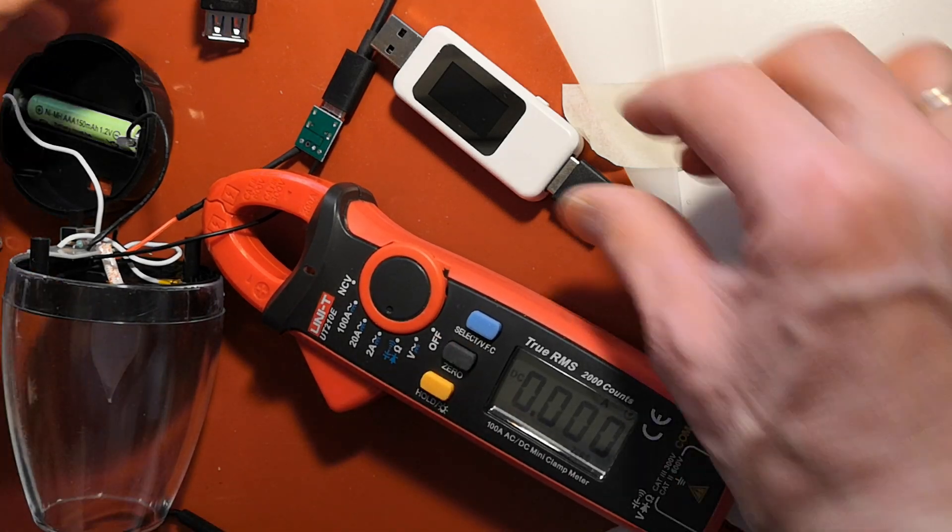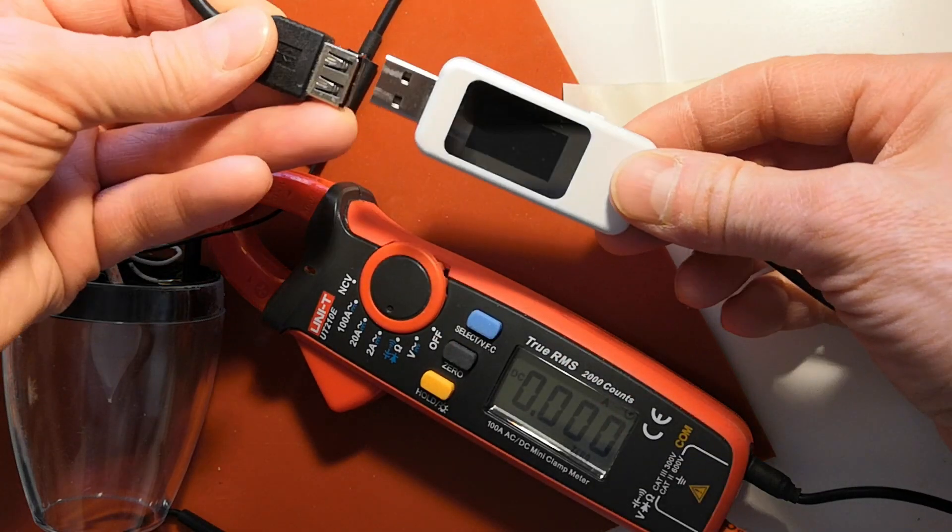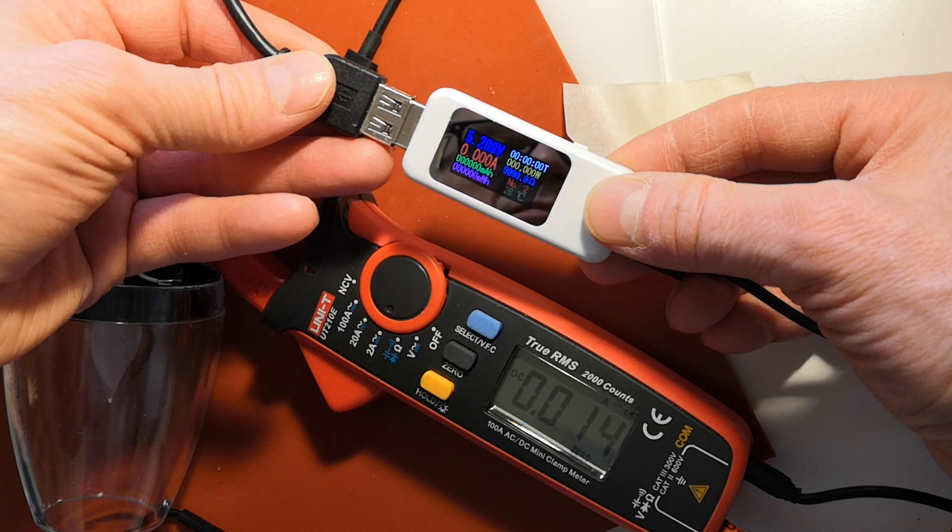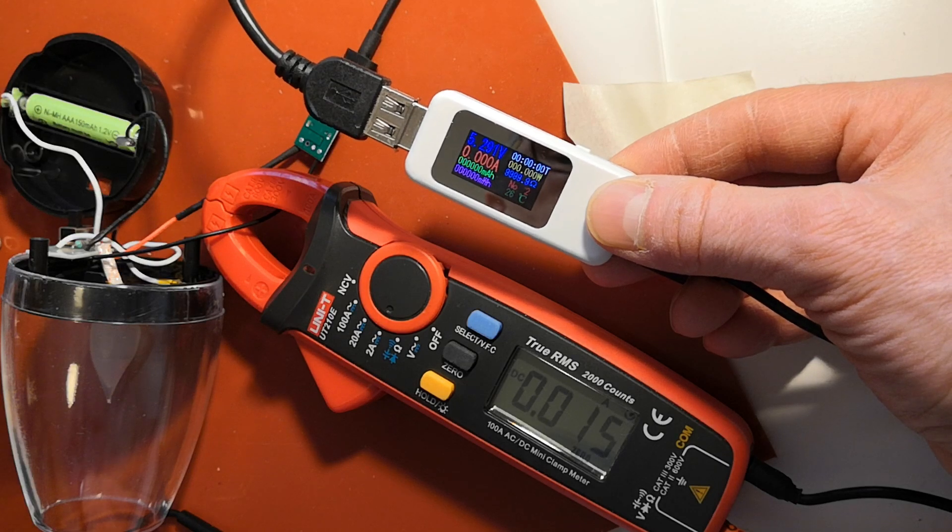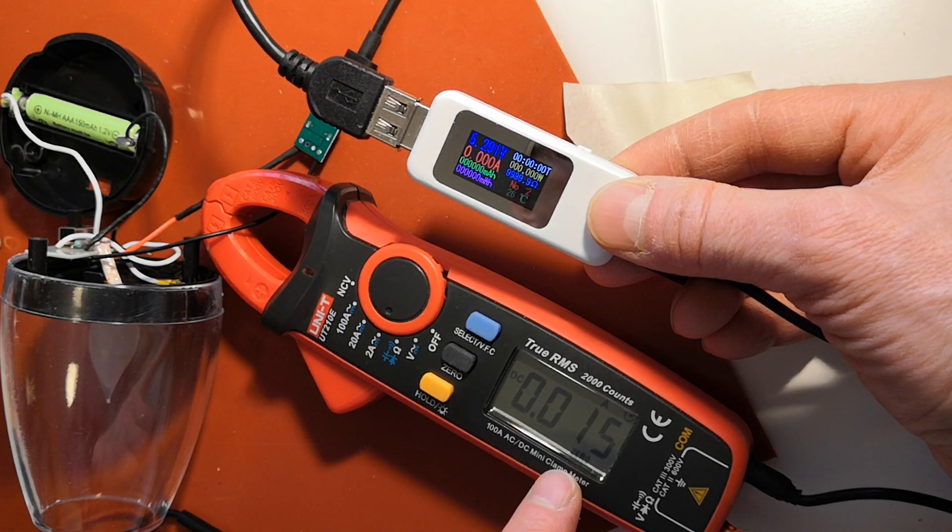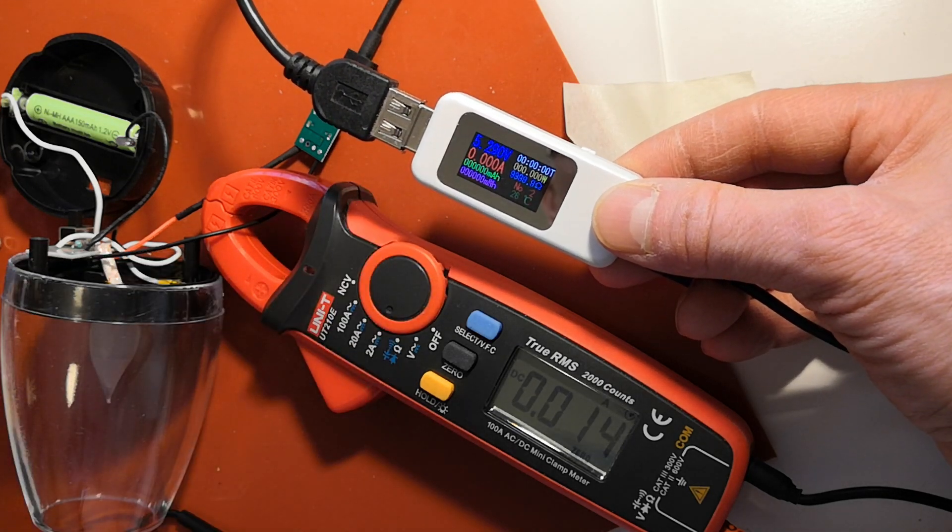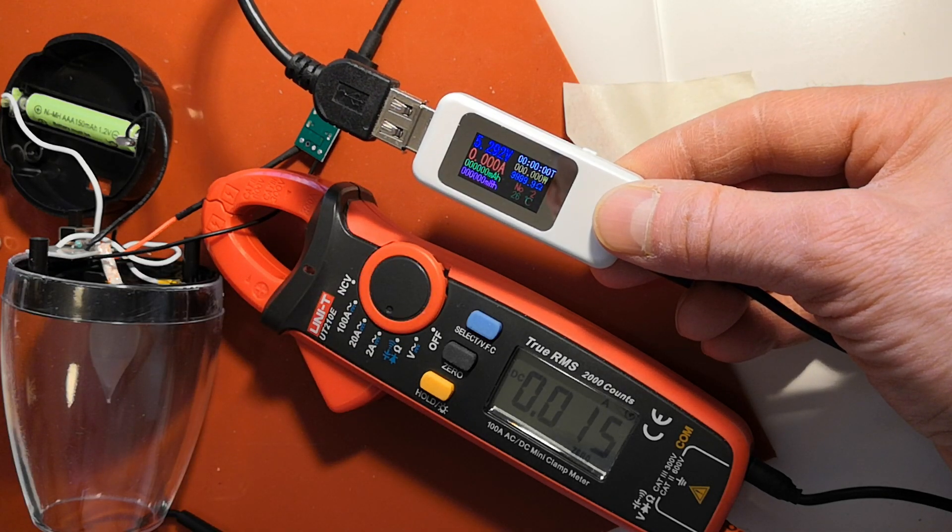Let's test with this clamp ammeter containing a Hall sensor. It's a very reliable and sensitive meter. The clamp ammeter indicates that the battery is charging, but the USB analyzer doesn't wake up with such a small current. The charging current is as calculated earlier. Let's continue assembling the device.